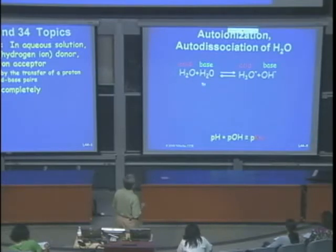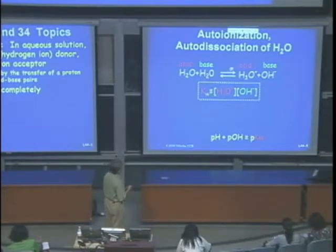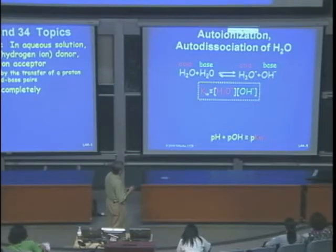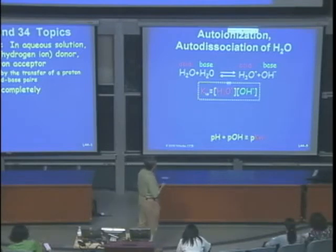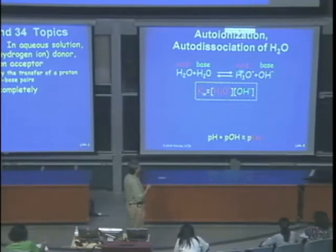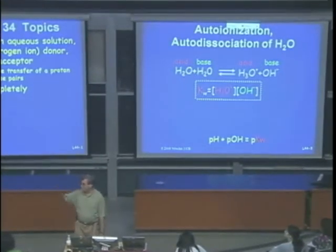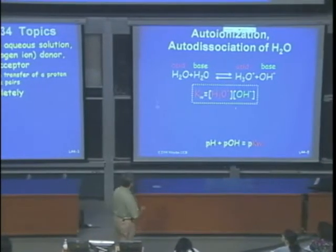Water can act as both acid and base simultaneously. The equilibrium constant for water's self-ionization is Kw, which equals [H3O+][OH⁻]. At 25°C, Kw = 10⁻¹⁴. If you reverse that equation, the constant is 10¹⁴. Since the concentrations of H3O+ and OH⁻ are equal in pure water, each is the square root of Kw — which is 10⁻⁷.